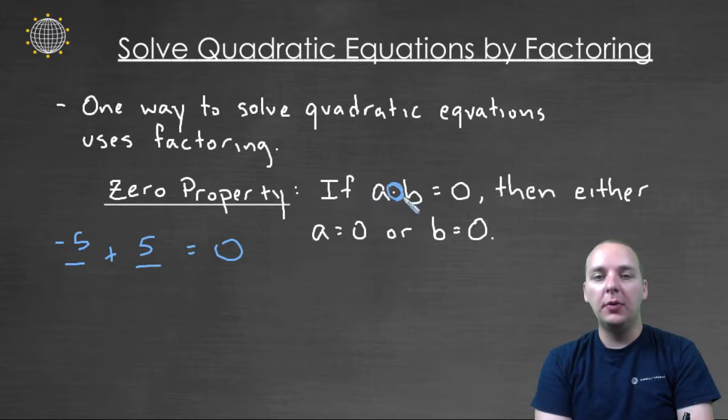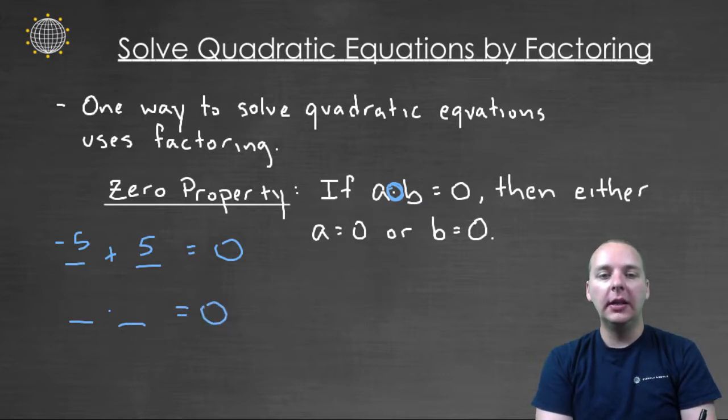But if you have multiplication here, there's no way in the world to have a product be zero unless either the first term was zero or the second term was zero.